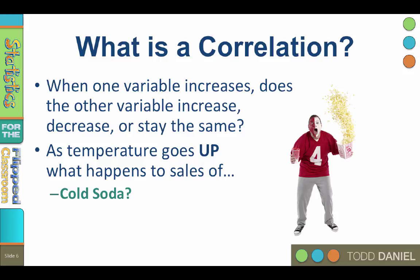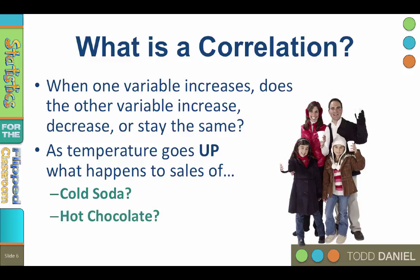What happens as temperature goes up to the sales of hot chocolate? They go down. Hotter temperatures correlate with less hot chocolate sales. Colder temperatures correlate with increased hot chocolate sales. When one goes up, the other goes down. They change in the opposite way.